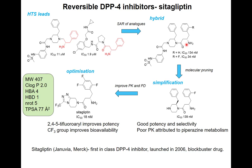The hybrid was pruned down to the minimum needed for activity, yielding a potent DPP-4 inhibitor from a smaller fragment. However, it was also prone to in vivo metabolism, suggested to be due to the piperazine ring: the lone pair on the nitrogen makes it electron rich, allowing it to interact with metabolic enzymes like cytochrome P450 and lead to oxidation. Further optimization addressed both pharmacokinetics and potency.